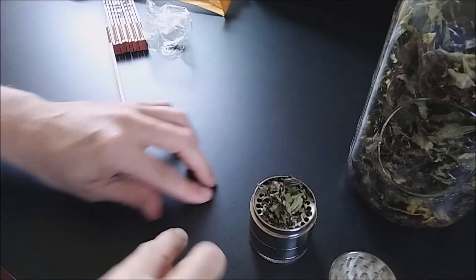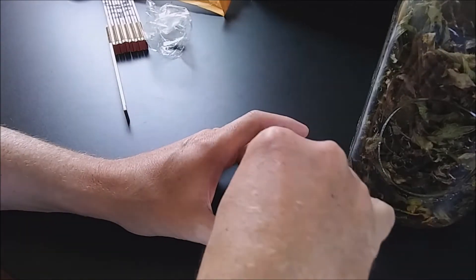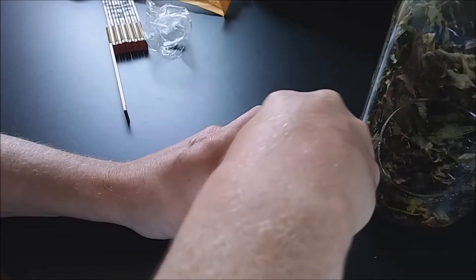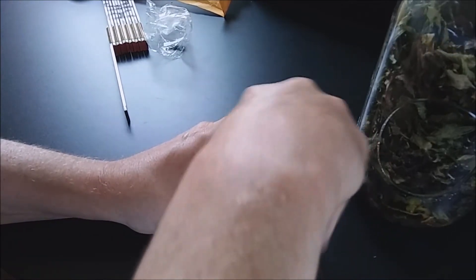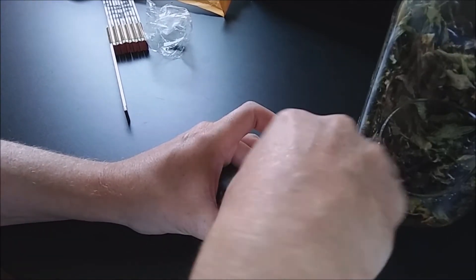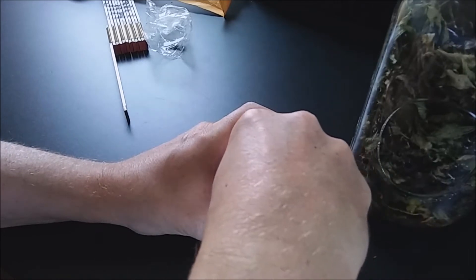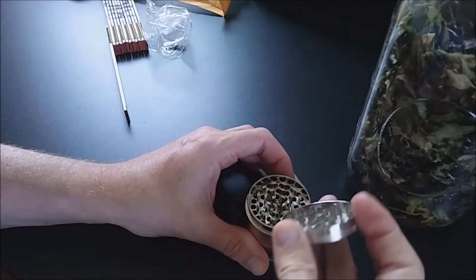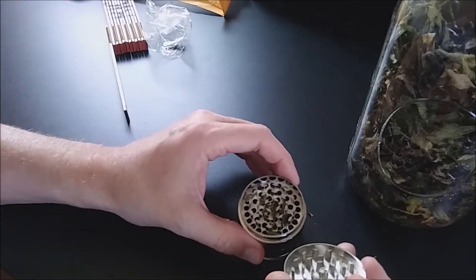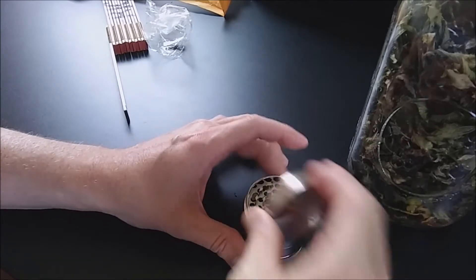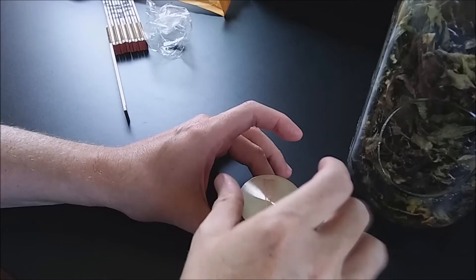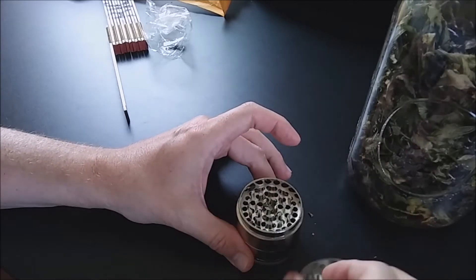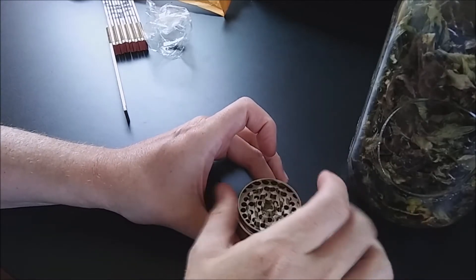Here's a couple large leaves there. Go ahead and put the lid on, turn it back and forth clockwise and counterclockwise. And now it's gotten a lot smoother. We'll pop this off and take a look. There's very little in the top part here. You can really smell the mint as it's ground up. We'll go ahead and remove this second chamber.